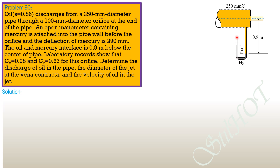This is the mercury deflection of 290 mm. We have oil of specific gravity 0.86. Let's call the points here as point 1 and point 2, where we set up the energy equation to solve for the theoretical velocity, and then the actual discharge using: Q = coefficient of discharge × area × √(2gh).